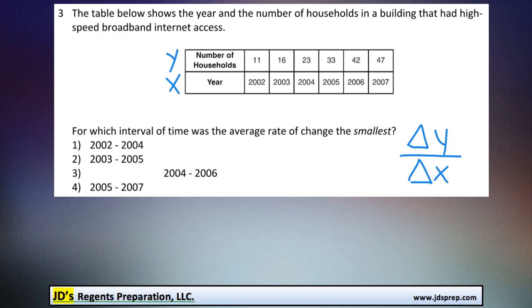So what we're going to need to do is compare... Let's look at the first possibility, 2002 to 2004, from here to here. First we're going to look at the change in y. How much did the number of households change? Well, it went from 11 to 23. So essentially what we're going to do is find the difference between 23 and 11, and I can just do that by subtracting them.